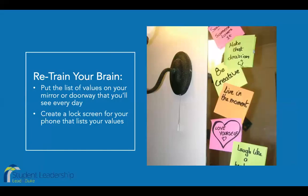Another way to help you prioritize your values: put the list of values somewhere you'll see them every day. This might be posted on your mirror or door, or create a lock screen for your phone with the list of values on it. This technique also helps build new patterns in your brain to think about these values more often, so it becomes more automatic instead of requiring a reminder and the energy that that can take.